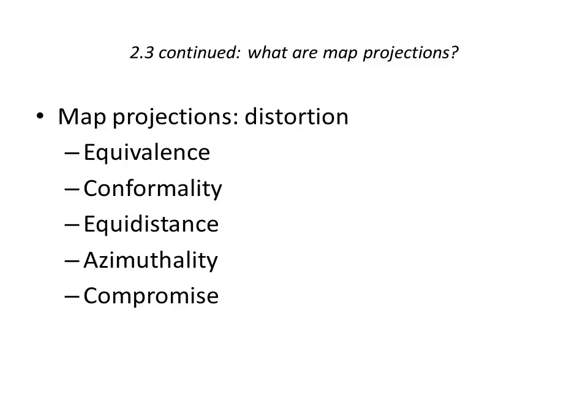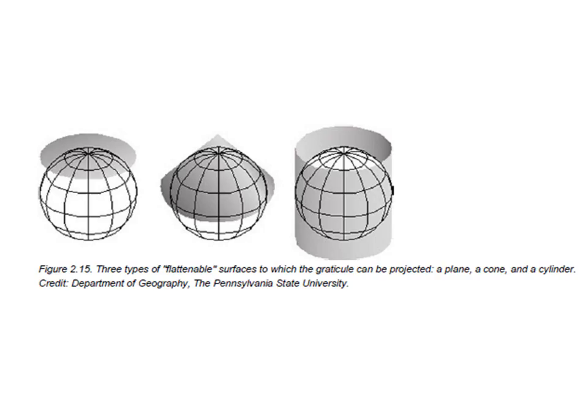Map projections are distorted. There's no way around it. We're taking a three-dimensional globe, and we're trying to represent it in two dimensions. So we have several different categories of map projection distortion: equivalence, conformality, equidistance, azimuthality. And then we have resulting compromise projections that attempt to mitigate and minimize the projection distortion in one or more categories.